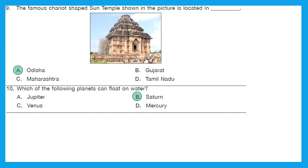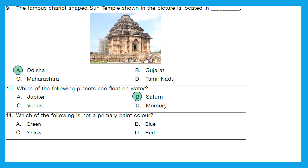Saturn — option B. Saturn is very large and is the second largest planet in the solar system. However, it is made up of mostly gases and is less dense than water. Since it is lighter than water, it can float on water. None of the other planets can do this because they have a higher density than water.